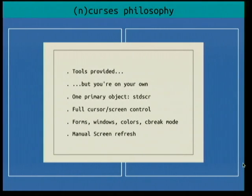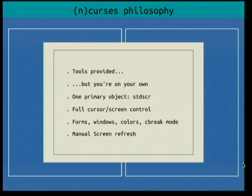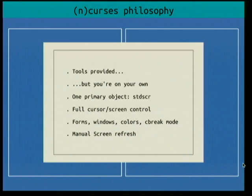The philosophy: the tools are provided, but you are on your own. They give you one primary object — the standard screen — which represents the entire screen. You have full control: you can put form elements, windows, colors. They also introduced a new mode called character break, which sits between raw and cooked. Character break breaks on every character, but also interprets character sequences like Control-C and Control-Z. You also have to refresh the screen manually in the right order, which you'll see in the program.